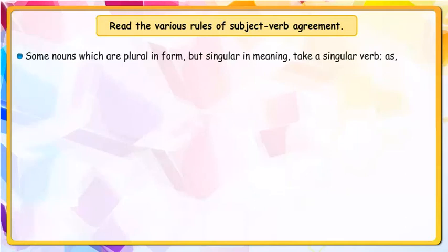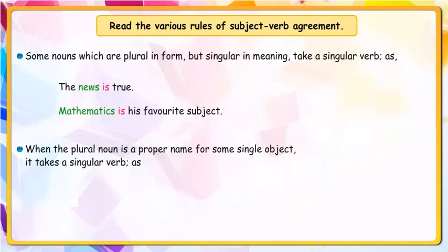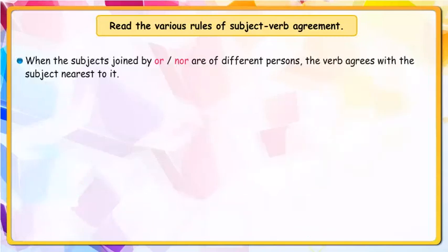Some nouns which are plural in form but singular in meaning take a singular verb. For example: 'The news is true.' 'Mathematics is his favourite subject.' When a plural noun is a proper name for some single object, it also takes a singular verb. For example: 'Jatak Tales is a book about Buddha's life.' 'Gulliver's Travels was written by Jonathan Swift.'